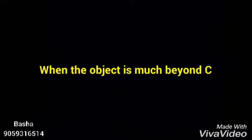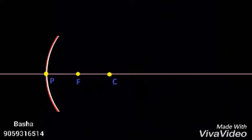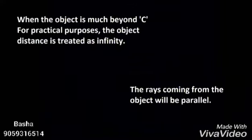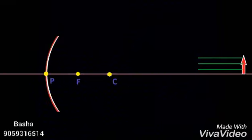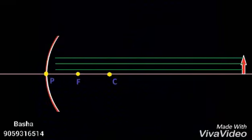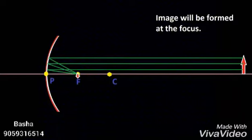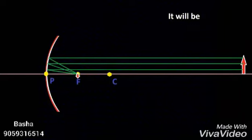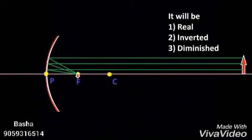Case 2: When the object is much beyond C — for practical purposes, a distance greater than 10f is treated as infinity — the rays will be parallel. Parallel rays converge to a point called the focus. The image will be formed at the focus and the image will be real, inverted, and diminished.